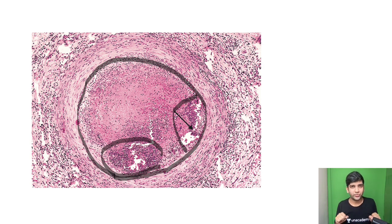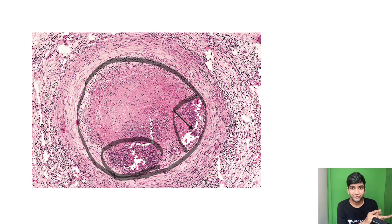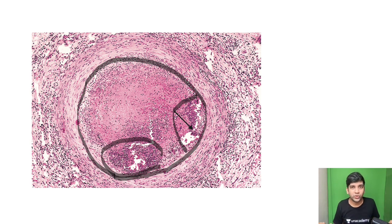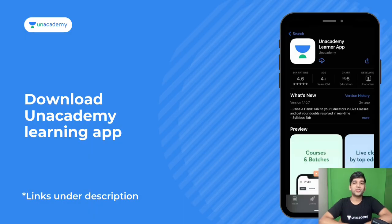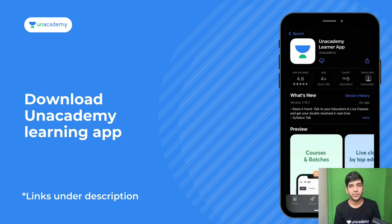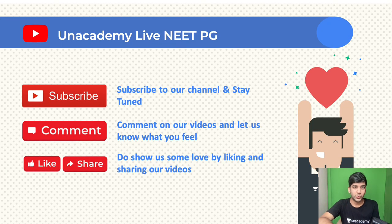We have quickly gone through images of vasculitis and learned how to differentiate vasculitis with granulomas from those without. To summarize: any large vessel vasculitis will have giant cells on microscopy, and you cannot differentiate clinically or microscopically. The only point of difference is age — less than 50 years is Takayasu, more than 50 years is temporal arteritis or giant cell arteritis. Thank you for listening. Do turn on the Anani Academy app for special classes. If you have any error in the recall of this question, please comment below.